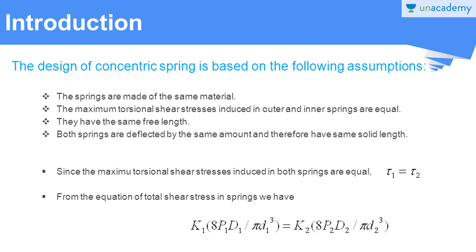Since the maximum torsional shear stresses induced in both springs are equal, that is given by τ₁ equals τ₂. From the formula for the total shear stress developed in the spring wire — given by K × 8PD / (π d³) — we can write: K₁ × 8P₁D₁ / (π d₁³) equals K₂ × 8P₂D₂ / (π d₂³).